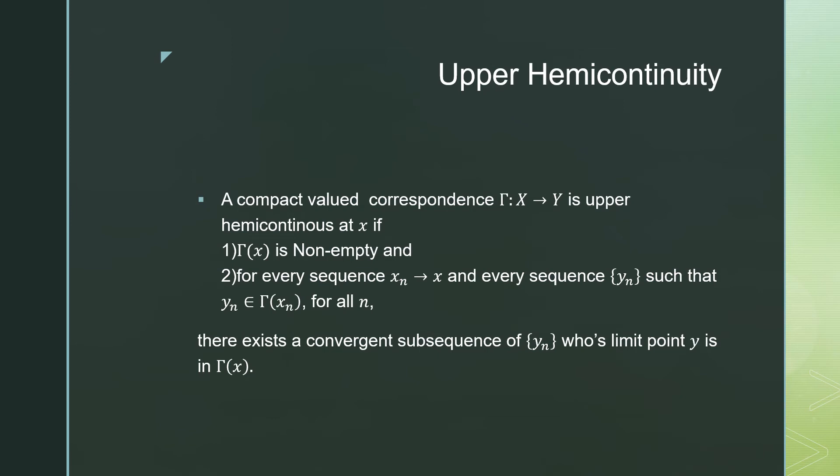And every sequence y_n such that y_n is contained in our feasibility set where Γ is evaluated at x_n for all n, there exists a convergent subsequence of y_n whose limit point is also in Γ(x). So we have to keep these definitions in mind for actually understanding what they mean, so let's look at an example.